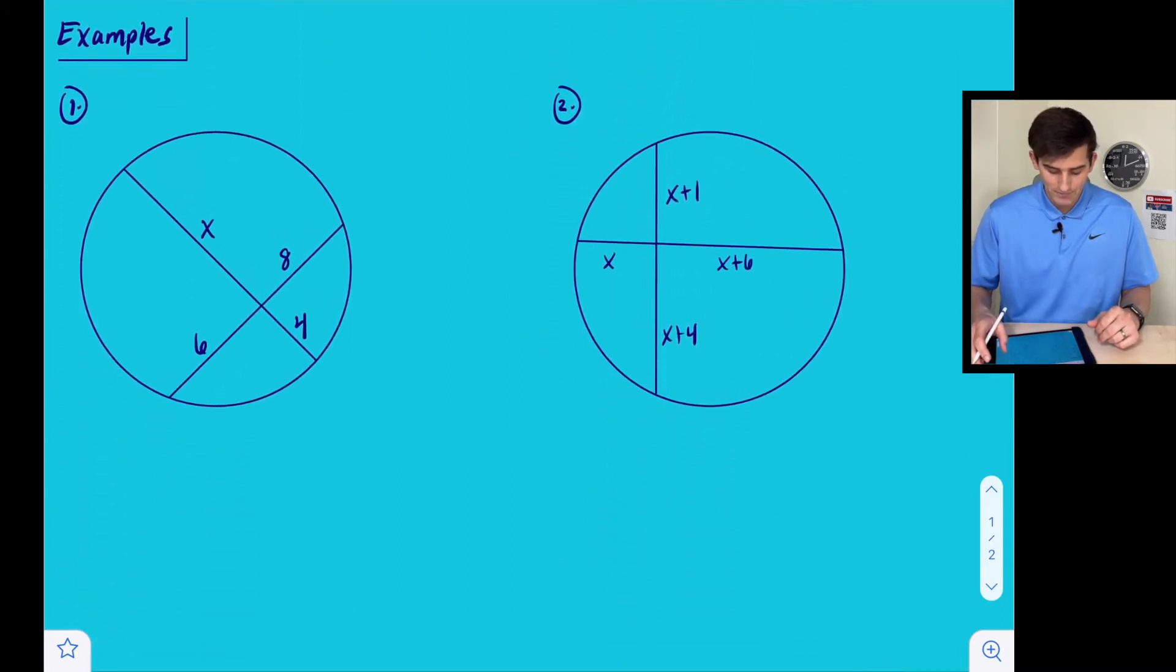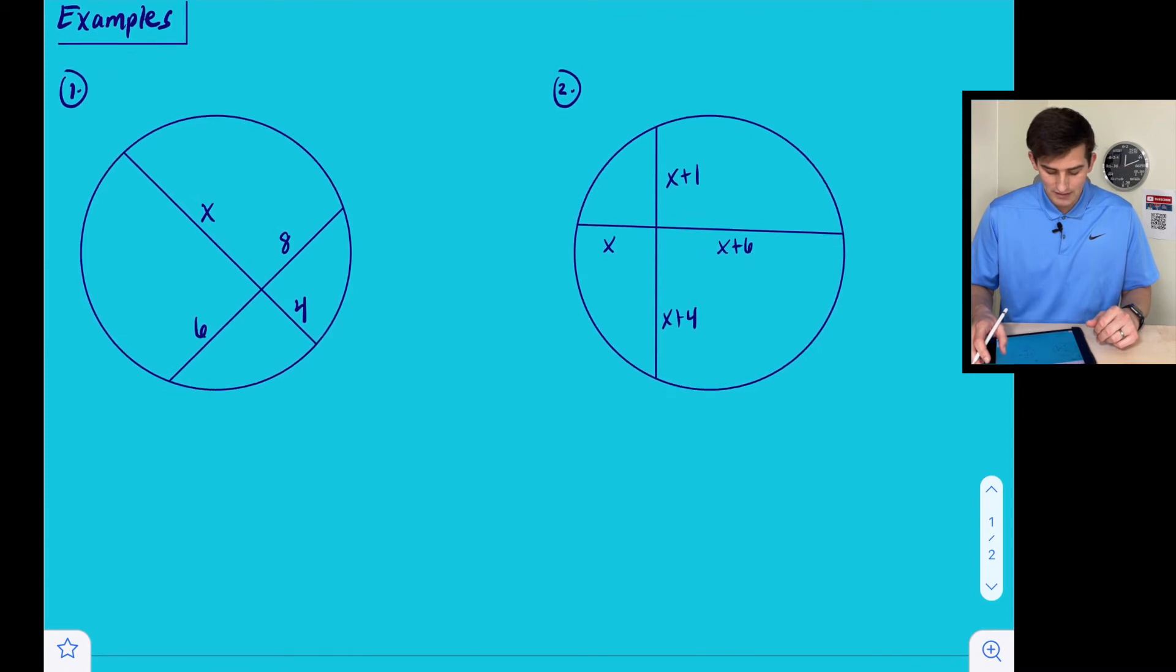So let's look at a couple examples here, and let's find the length of each chord. So for number one, we are given a measurement of six, a measurement of eight, a measurement of four, and a measurement of X.